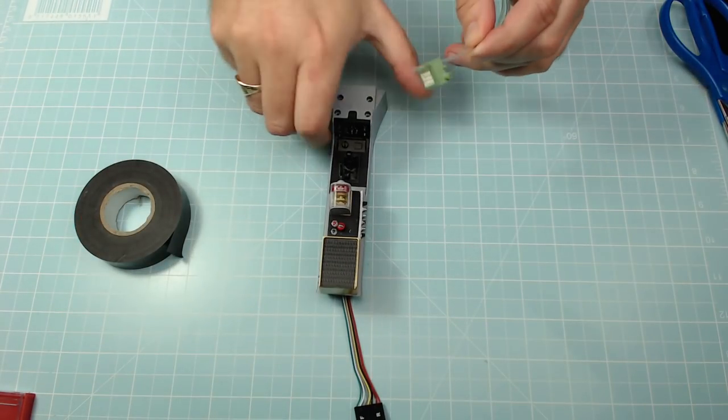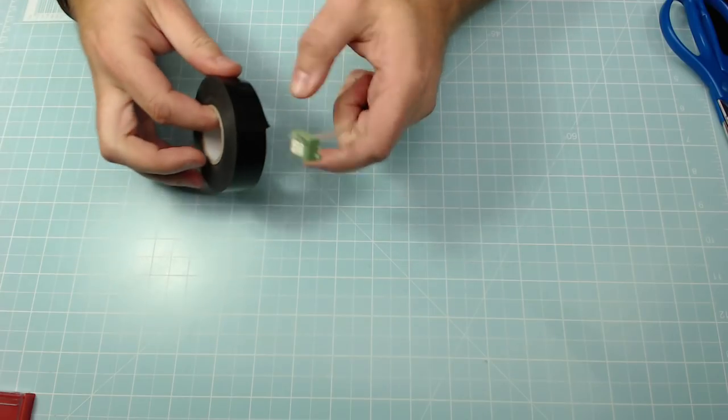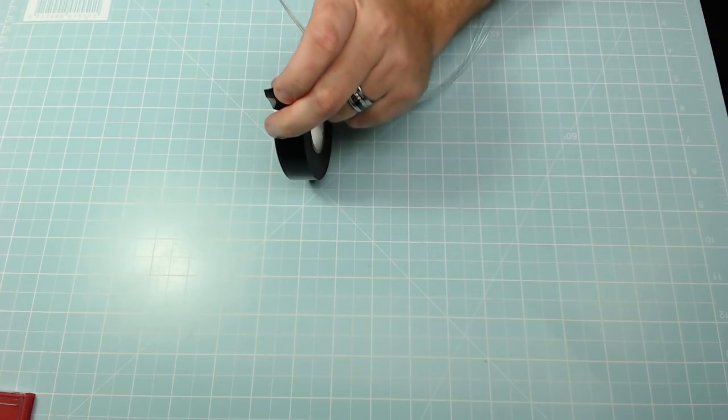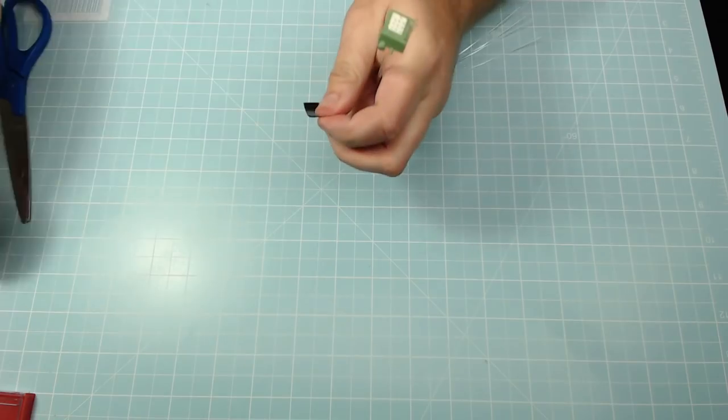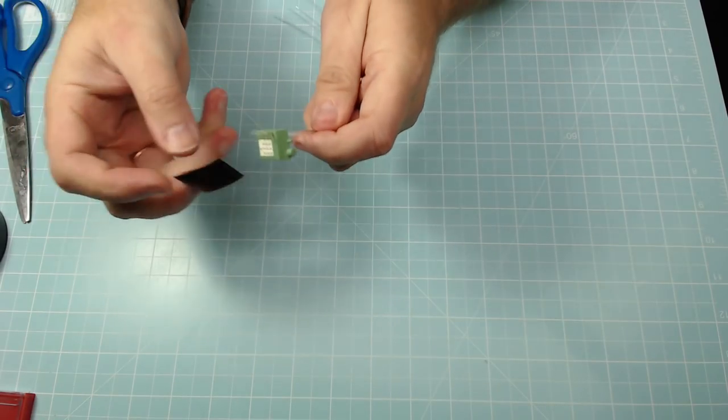So first things we'll do, we'll put that to one side and we'll get some of this tape off. We don't need a lot of it, just like that, and I'm just going to reinforce it on this side here.